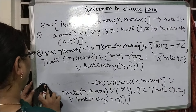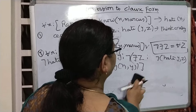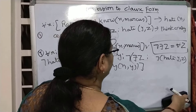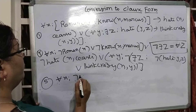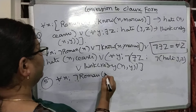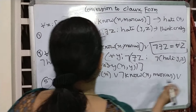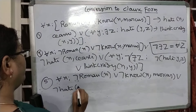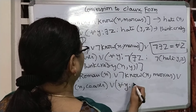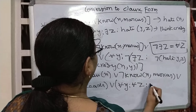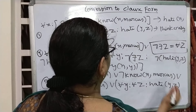After application of this negation, the entire thing will change. Now writing step number 5: for all x, negation of Roman(x) or negation of no(x, Marcus) or negation of hate(x, Caesar), or for all y, for all z, negation of negation of hate(x, Caesar) — simplifying — or for all y, for all z.